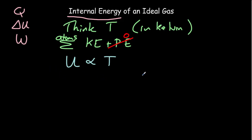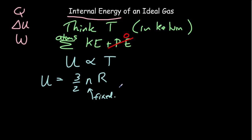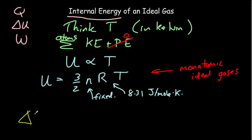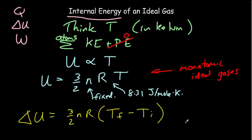The IB gives you the equation U = 3/2 nRT, where n is the number of moles (constant in our problems), R is the universal gas constant (8.31 J/mol·K), and T is temperature in Kelvin. Be careful — this equation only applies to a monatomic ideal gas, which refers to the noble gases. For such a gas, the change in internal energy is ΔU = 3/2 nR(T_final − T_initial), with temperatures in Kelvin.